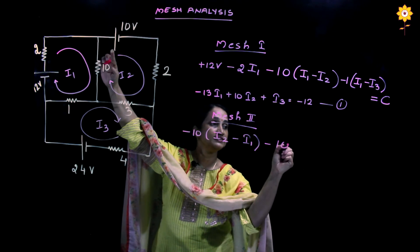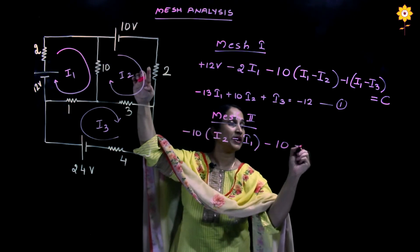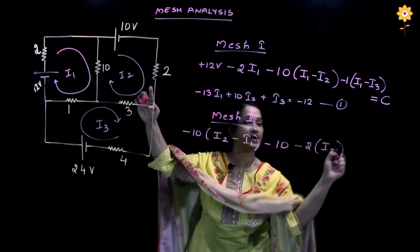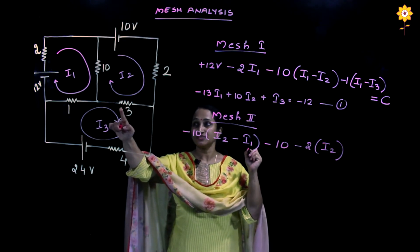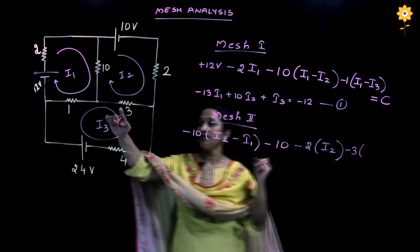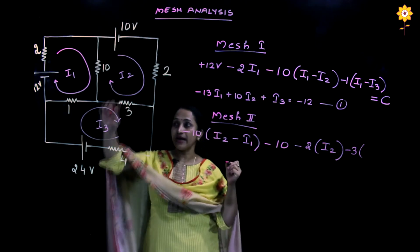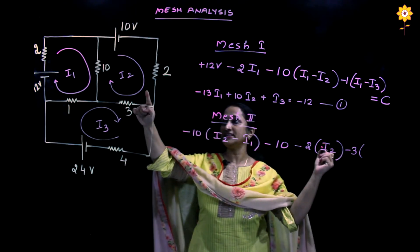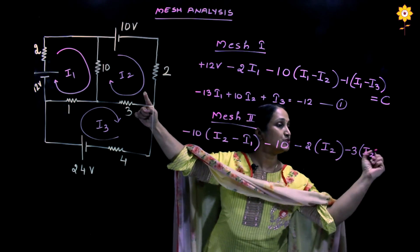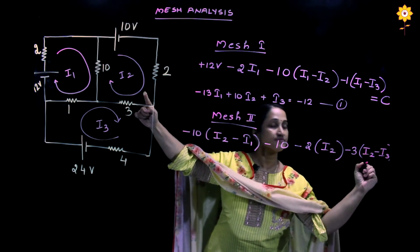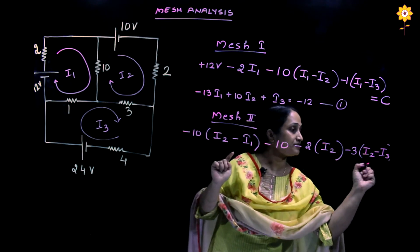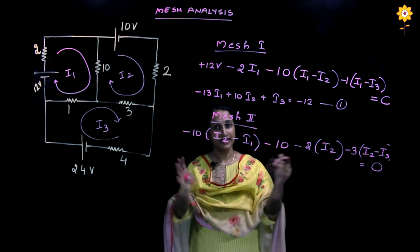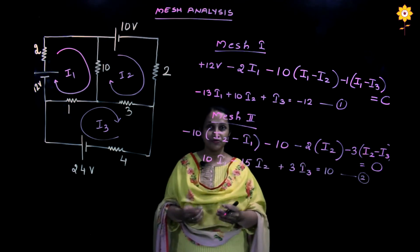When the mesh 2 current reaches the voltage source, the arrow first touches the positive sign, so we write minus 10 for that source. The 2-ohm resistance has only I2 flowing through it, so minus 2 times I2. The 3-ohm resistance has I2 and I3 in opposite directions, so minus 3 times (I2 minus I3). Having covered all elements, the sum equals zero. Group the terms accordingly.